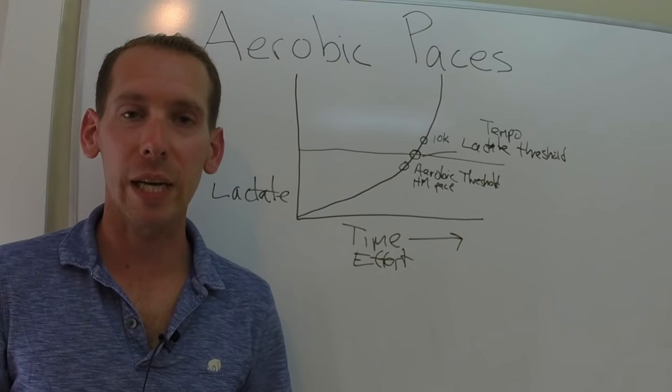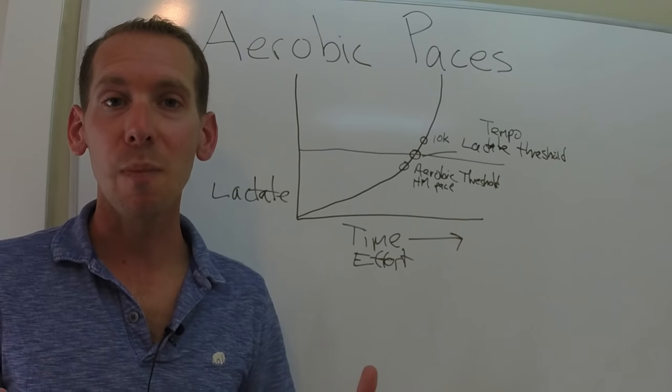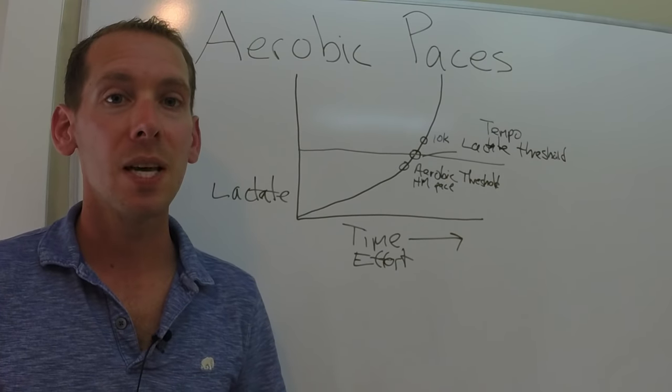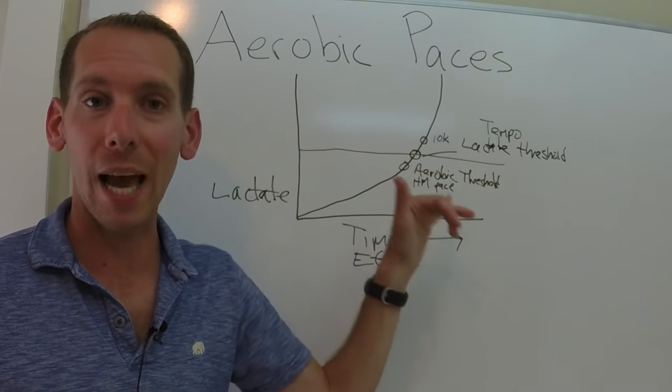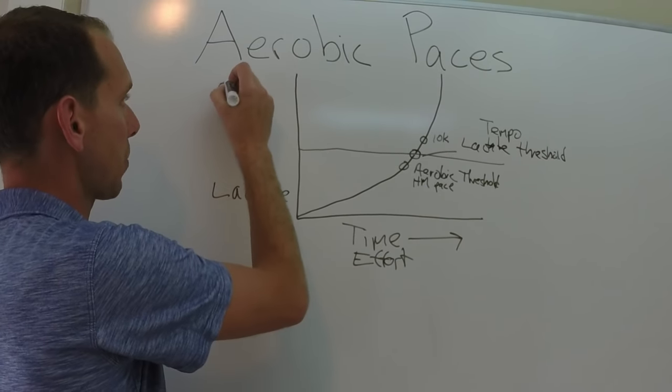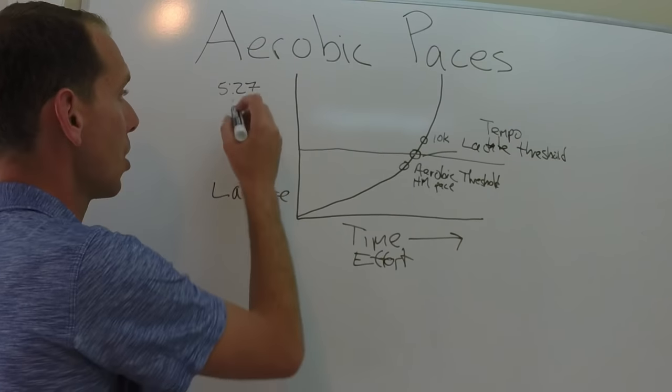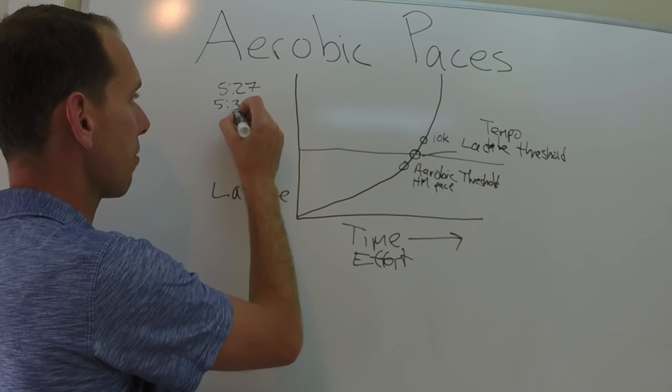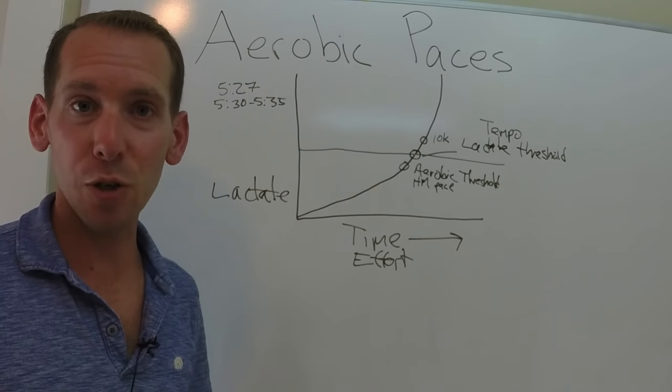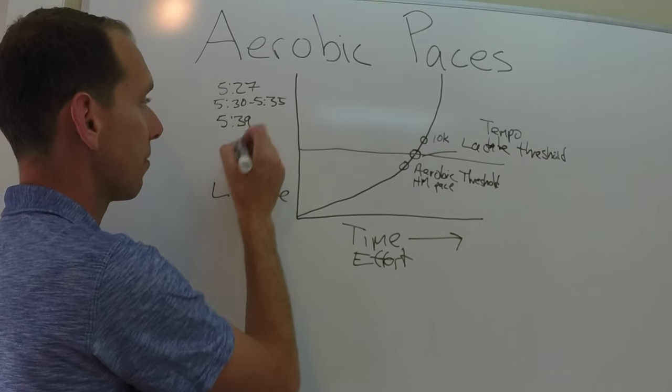So let's look at a really quick example from my own running. Back when I was in my peak fitness, my peak ability, back when I was running as fast as I possibly could over the course of my career, the paces for me worked out really well. So at my peak, my 10K pace, my PR pace is 5:27 a mile. My tempo pace was almost always between 5:30 and 5:35 per mile. And my aerobic threshold or my half marathon pace, we work it out, 5:39 a mile.